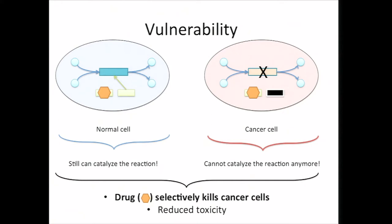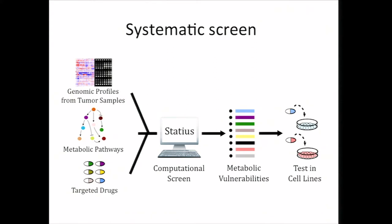This is the vulnerability we are talking about, and we are looking for these types of vulnerabilities in a systematic manner. Our project sits in the middle of a computational pipeline. Our method stands on the shoulder of really giant databases. Specifically, we take genomic profiles from cancer samples, detailed information about metabolic pathways, and drug target information, using them as input to our methods. As output, we create a list of metabolic vulnerabilities tailored for each patient — individualized metabolic vulnerabilities associated with drugs.